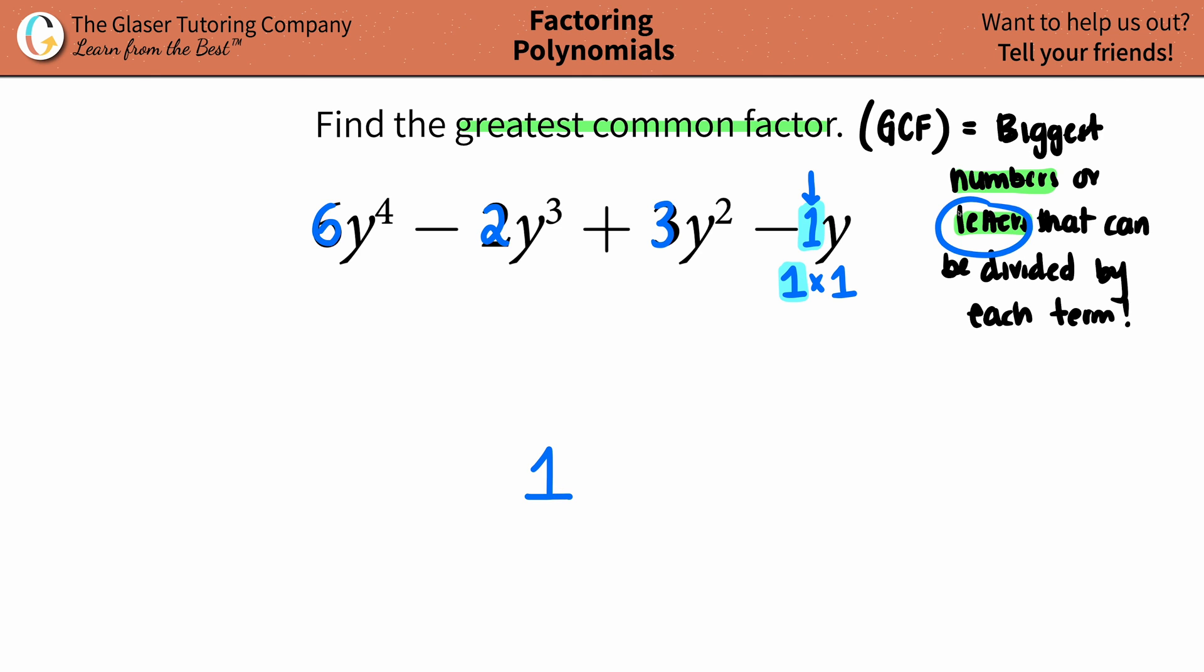Now let's move on with the letters, aka the variables. Remember, always start with the lowest ones. We have y to the 4th, that means you got four y's. y to the 3rd, that means you got three y's. y to the 2nd, that means you got two y's. And y, this would be y raised to the 1st, meaning that I only have one y. So out of all of these variables, which one is the lowest one? This one. I only have one y. And they all have y's, but you can only pick the lowest one that they all have in common.